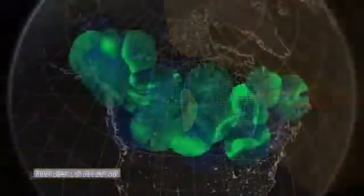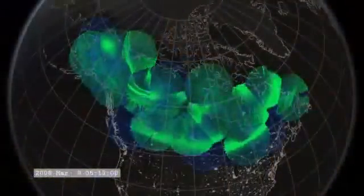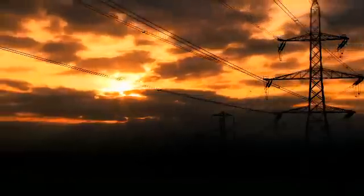Coronal mass ejections and solar flares are the hurricanes of space weather, and they have the power to disrupt our navigation systems, communications, and even electrical grids. So it's vital we know when they are coming.